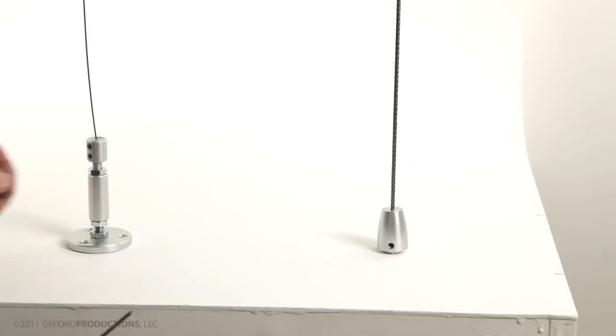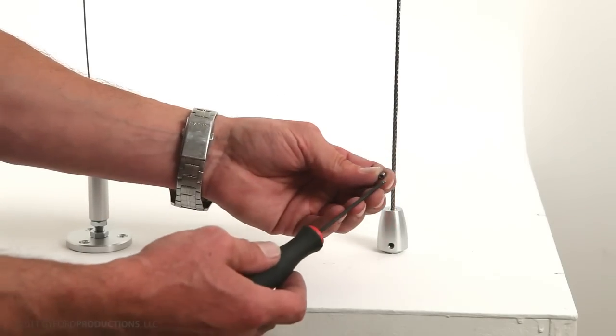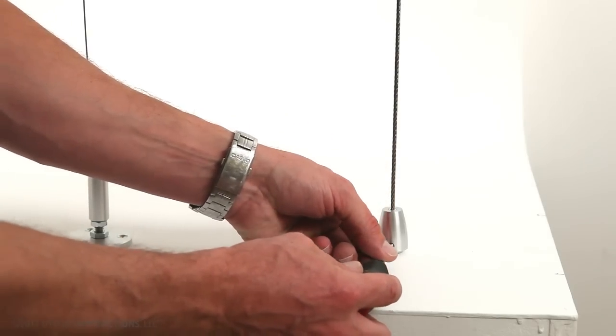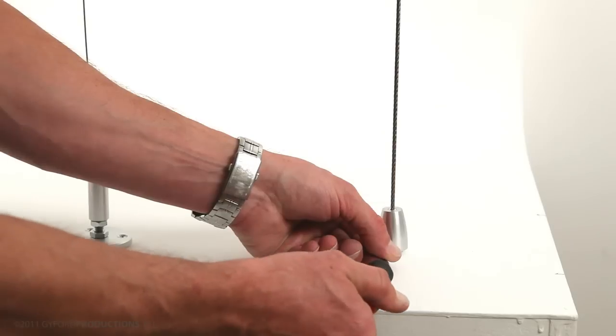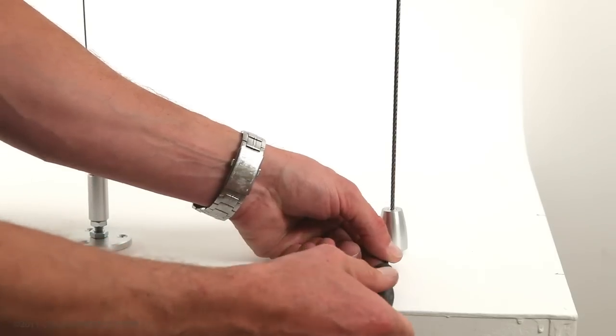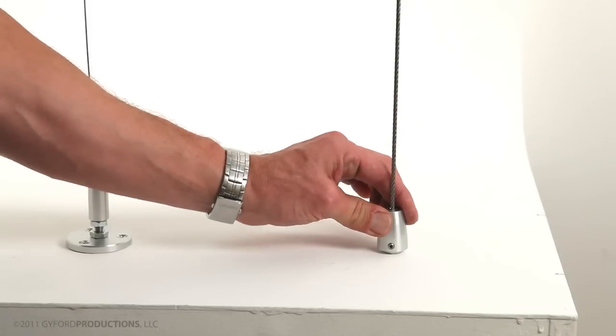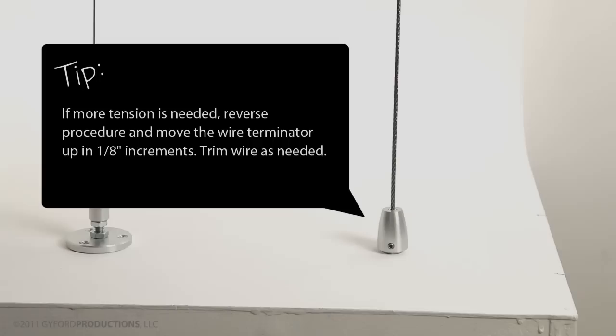The last step is to take that little nylon tip set screw I told you not to lose. Use your 3/32 hex wrench. Set it in that hole. Just snug it down. This will prevent the turnbuckle body from rotating and lock the whole thing up. The EZ-ATW-125 wire turnbuckle. If more tension is needed, reverse the procedure and move the wire terminator up in 1-1/8 inch increments.